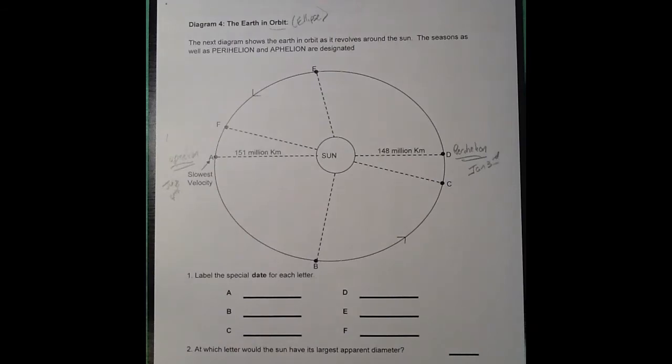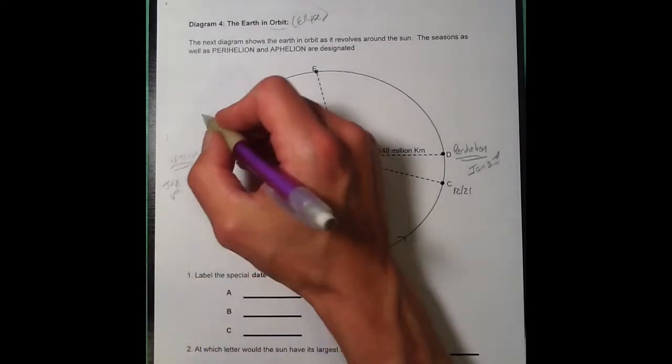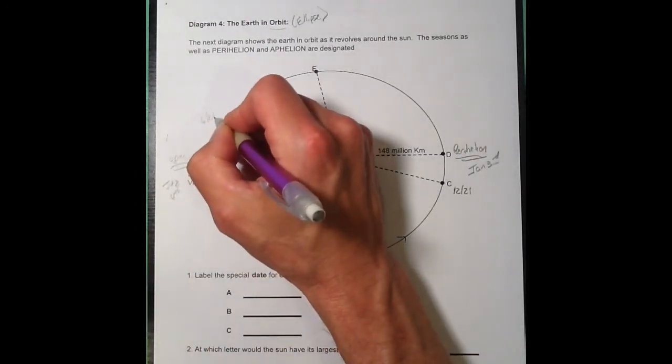We said perihelion is slightly before the winter solstice. So, point C here must be the winter solstice. That's going to be 12/21. Aphelion is slightly after the summer solstice. So, point F is going to be 6/21.